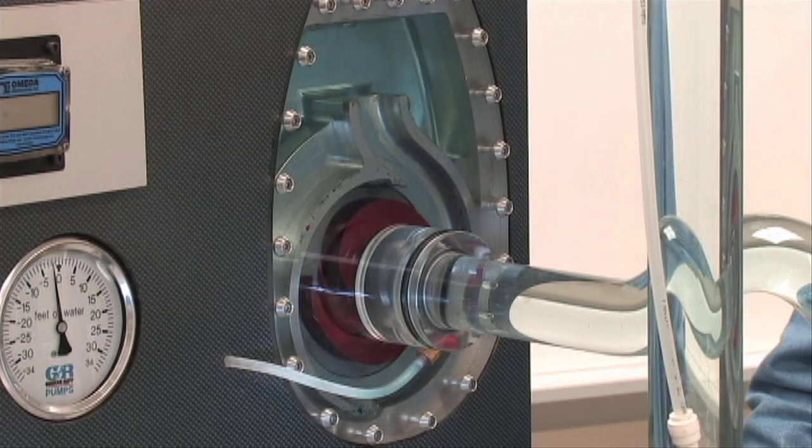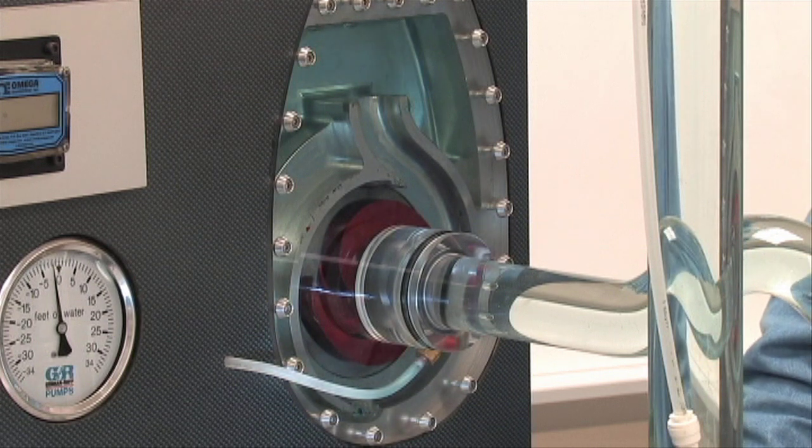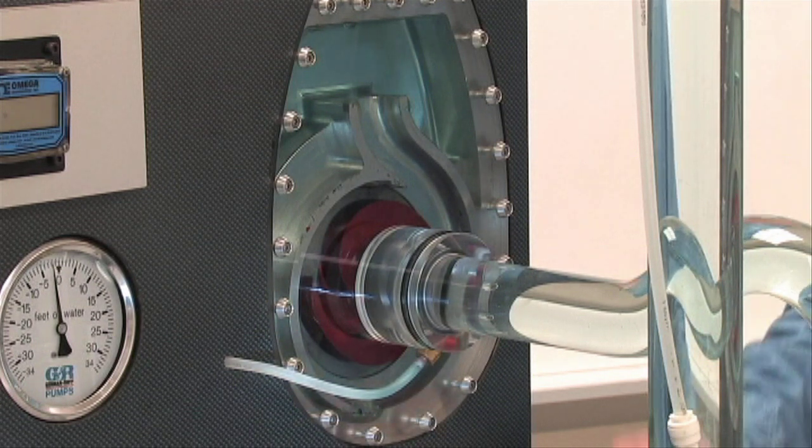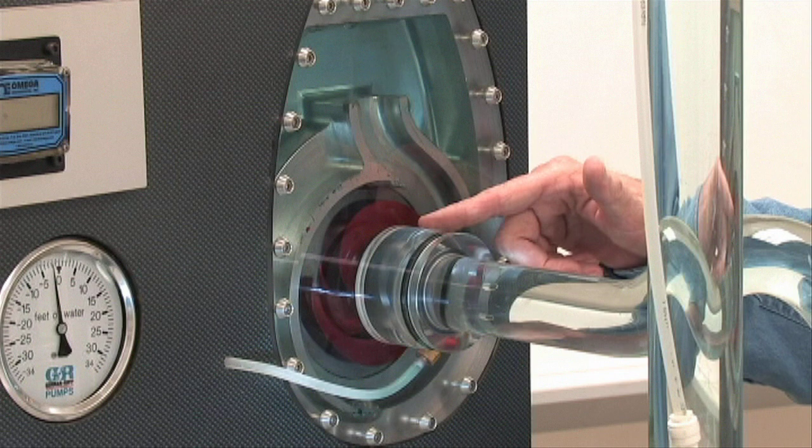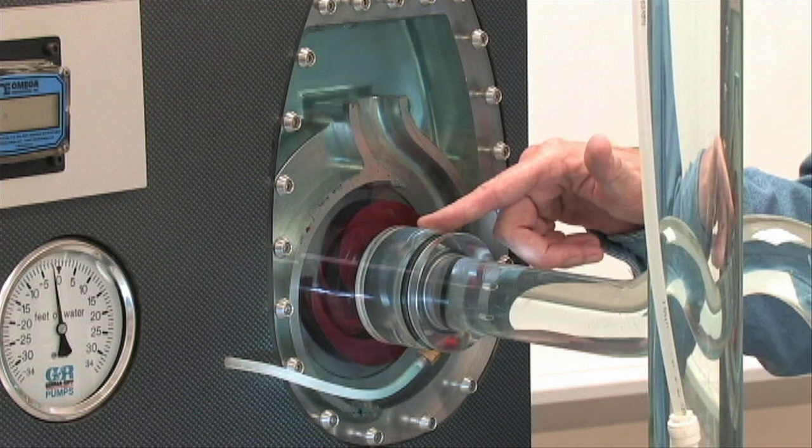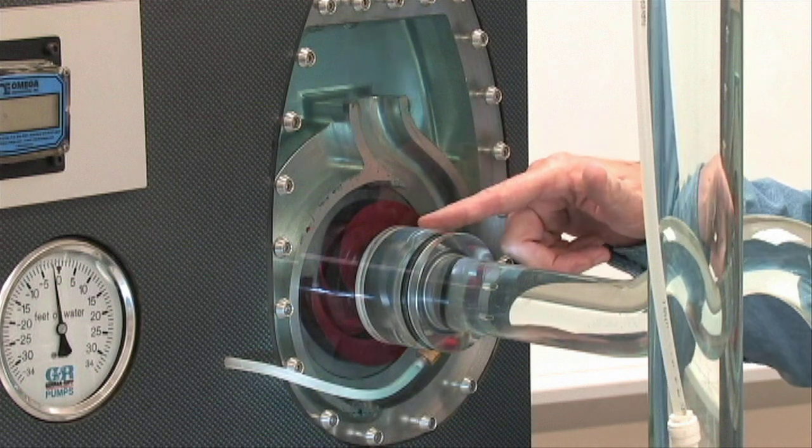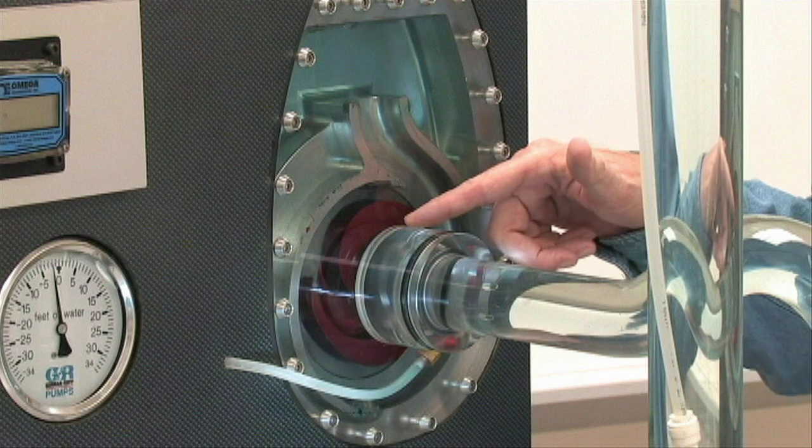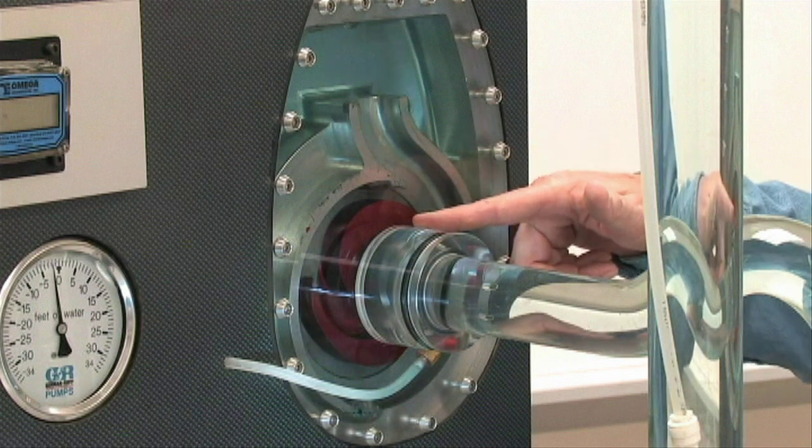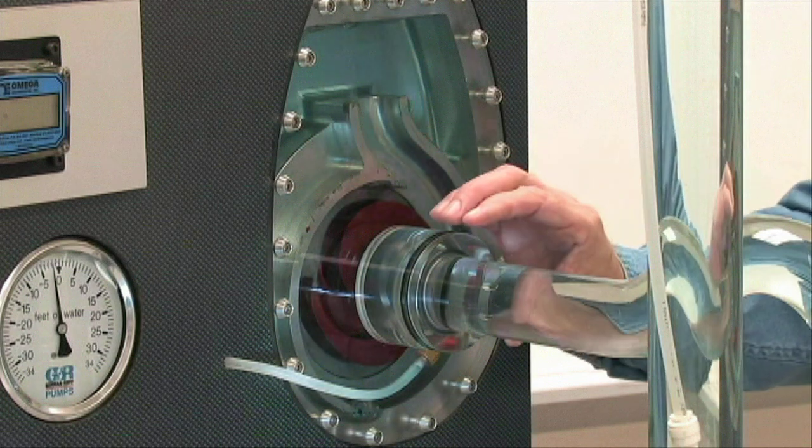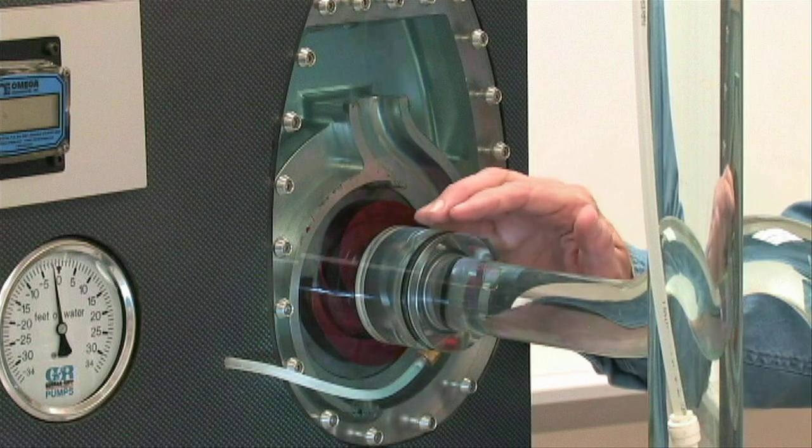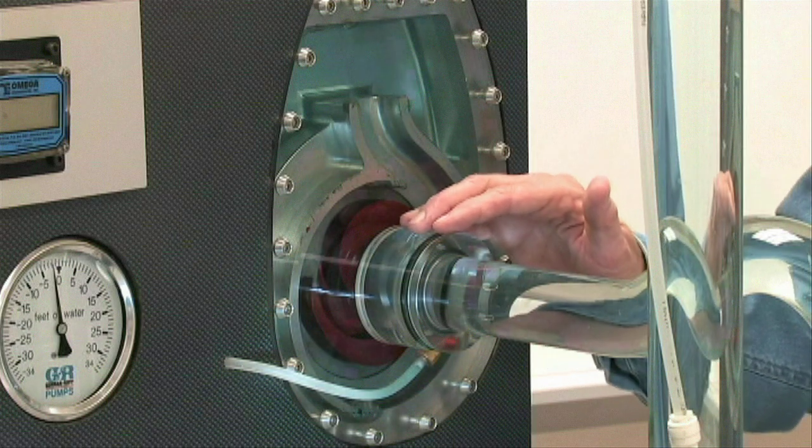Some other causes for failure to prime that cannot be demonstrated with the glass face pump include face clearance. The greater clearance between the impeller and the wear plate, the less vacuum created by the pump. This can also be caused by wear. Another cause could be a plugged eye. If you plug up the eye of the impeller with debris, it removes all the hydraulic capability of the impeller.